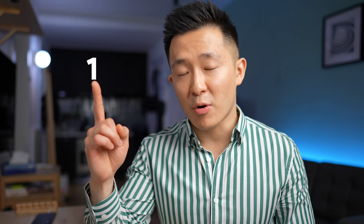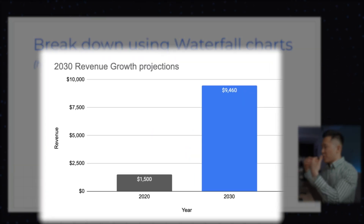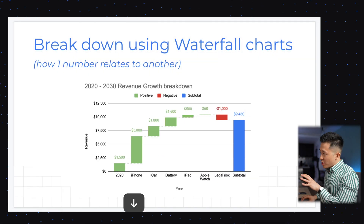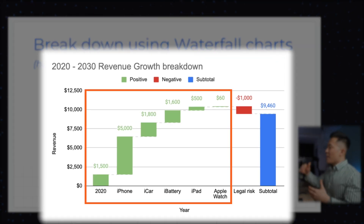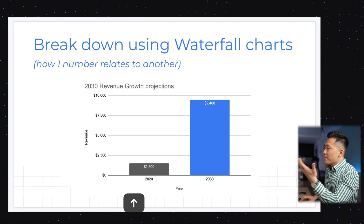And my personal favorite: waterfall charts. We used to love using these back in my management consulting days, because waterfall charts are amazing at showing how one number relates to another. For example, there's nothing wrong with this bar chart — we see the 2020 revenue and we see the 2030 projections. But how exactly do we get there? In this waterfall chart, we can clearly see the factors contributing to this change: how much each product SKU is going to grow. We can even see there's a negative downward pressure stemming from legal risk, which is something the audience would never get from a simple bar chart.